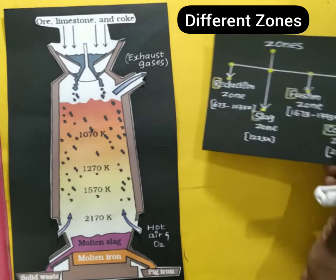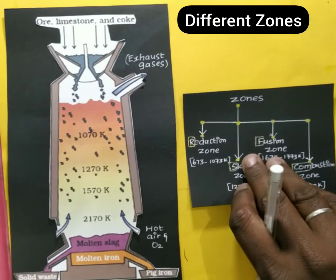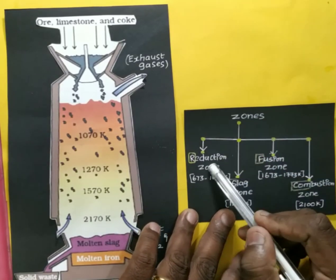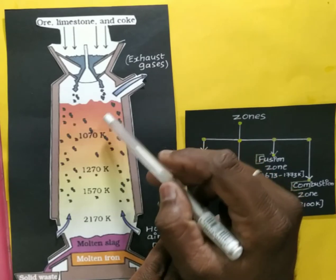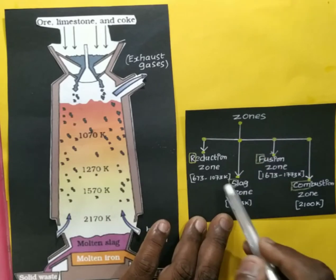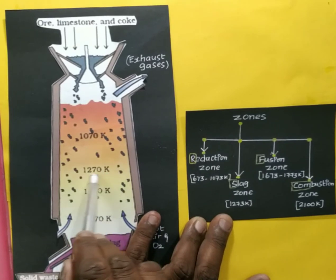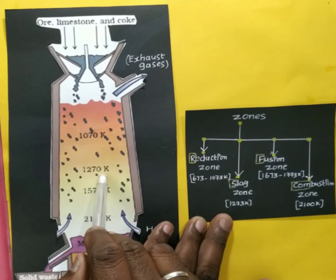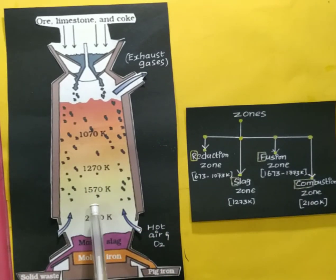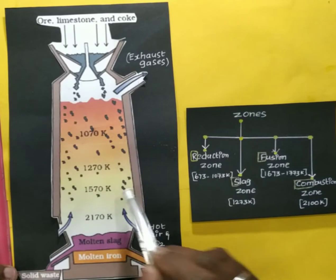What are all the different zones available? Let us check these zones. The first zone is the reduction zone — up to 1070 Kelvin. That upper part of the zone is called the reduction zone. The next zone is the slag zone at 1270 Kelvin. After that is the fusion zone, available in the range of 1572 to 1770 Kelvin.